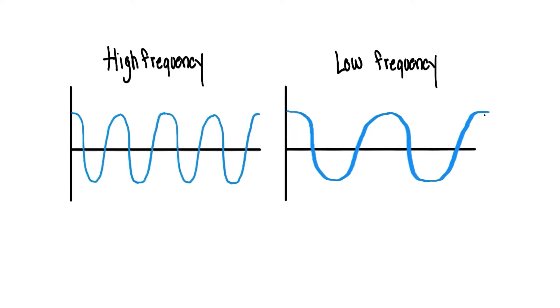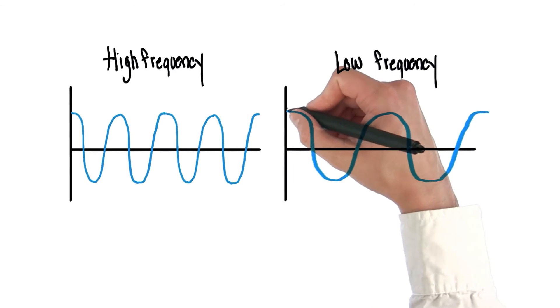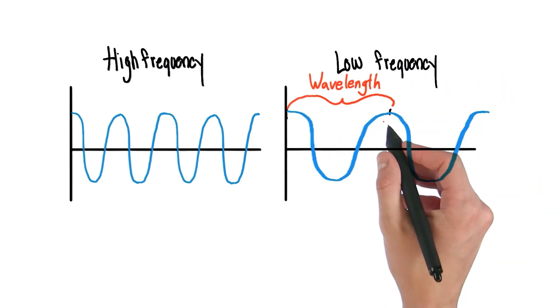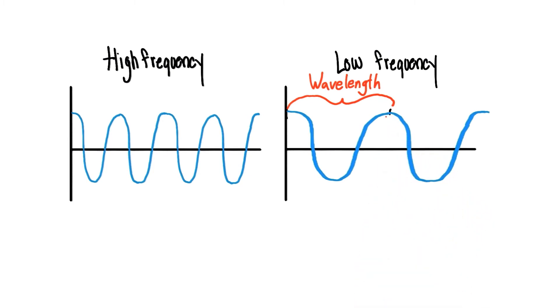So what does frequency have to do with light waves? Well, Lauren, with light we actually usually talk about wavelength, which is the distance between, let's say, here and here. And light waves can have all sorts of wavelengths. But we can only see certain wavelengths.